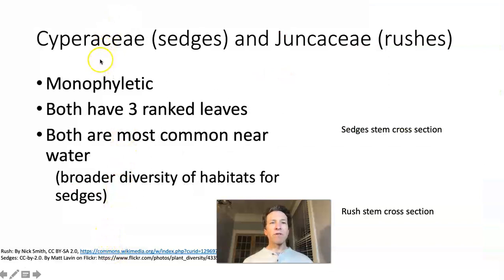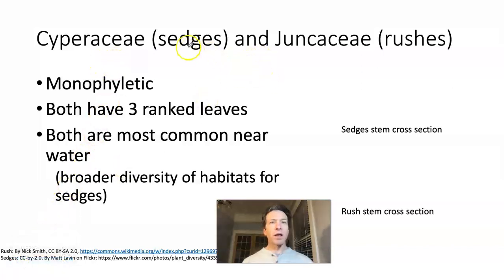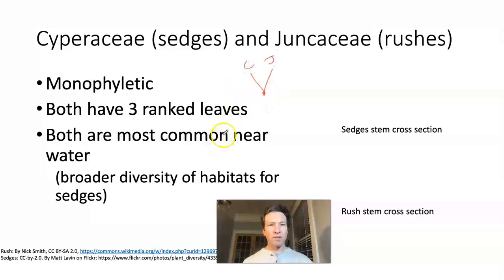We are going to shift gears and start talking about these families in smaller groups. On the phylogeny, we saw that the sedges and rushes are together monophyletic — Cyperaceae and Juncaceae are each other's closest relatives.